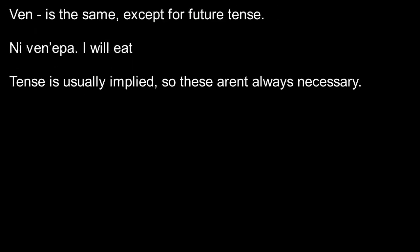Ven is the same, except for the future tense. So for example, ni-ven-epa means 'I will eat,' with ven-epa meaning 'eat in the future.' Tense is usually implied, and so this isn't all that necessary. However, sometimes you do need to say it, or use it in a compound word — that's why it's worth knowing. But most of the time, you'll imply tense and not actually specify.